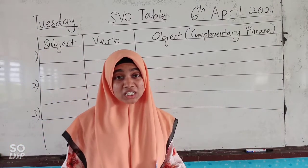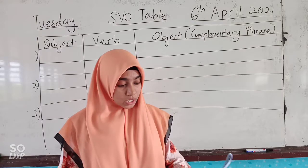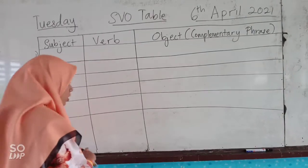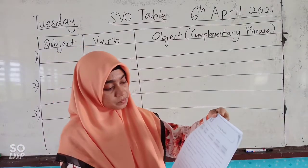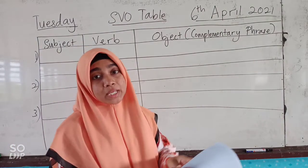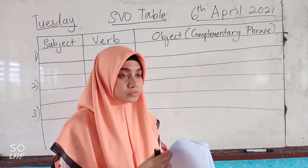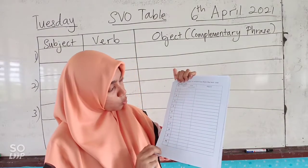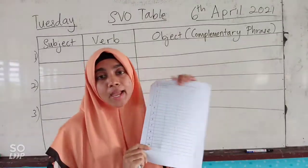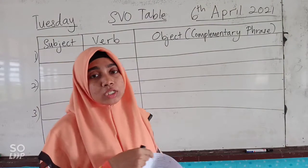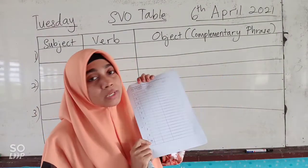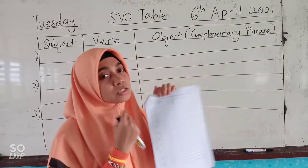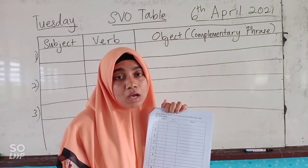Assalamualaikum and hello kids. So our next task, we are going to use page number 4. As usual, you need to copy down at least 10 sentences from the text into the SBO table.